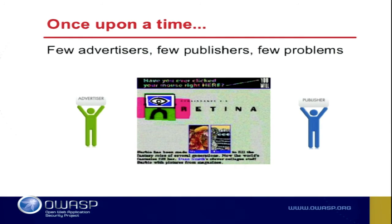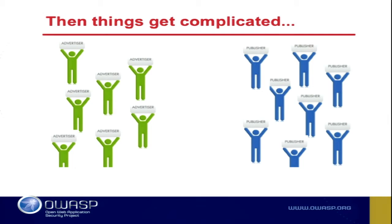Let's go back to the early to mid 90s. Back then, somebody wanted to advertise on a website — they'd figure out how to get a hold of the publisher, call them up, say 'we want to advertise, here's a piece of code, put it on your site, let's figure out a deal.' It was very off the cuff, not a lot of structure — a one-to-one type of relationship. As time went on, more publishers and advertisers popped up, and this internet thing started to take off. A publisher is basically a website that earns money by serving ads against its users.